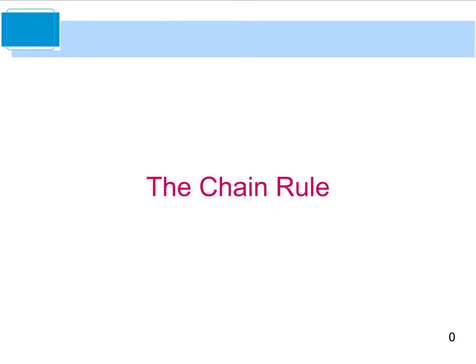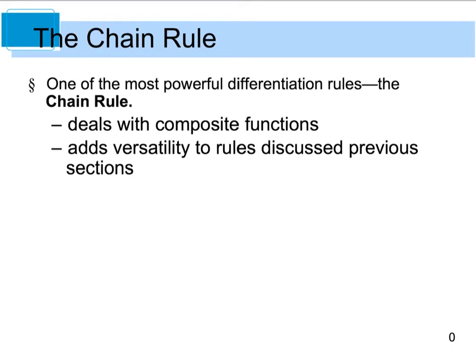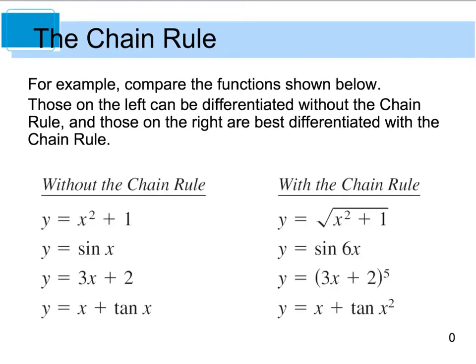So let's look at what the chain rule is. The chain rule is one of the most powerful differentiation rules that you're going to learn. It essentially deals with composite functions, and it's also going to add some variety to the rules we've already talked about in the previous two sections. If we look at this table, these are functions that you can take the derivatives of without a chain rule. Once we go to take a derivative of something that looks like these other examples, we can no longer use the rules we've learned so far — we have to use the chain rule.